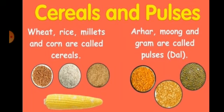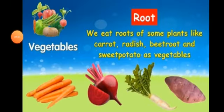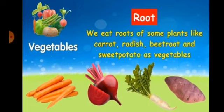We eat different parts of plants as our vegetables. First, we eat roots of some plants — like carrot, radish, beetroot, and sweet potato as vegetables. These roots grow in the ground and we eat them as a vegetable every day.